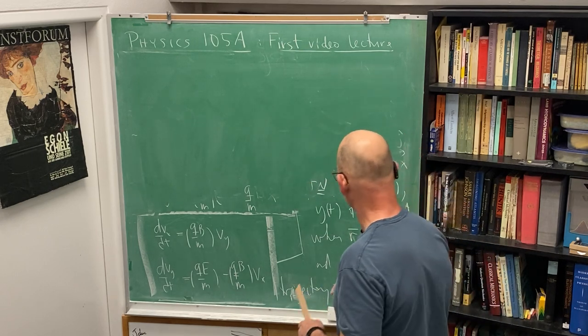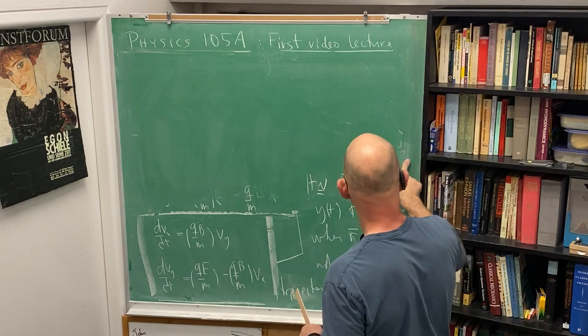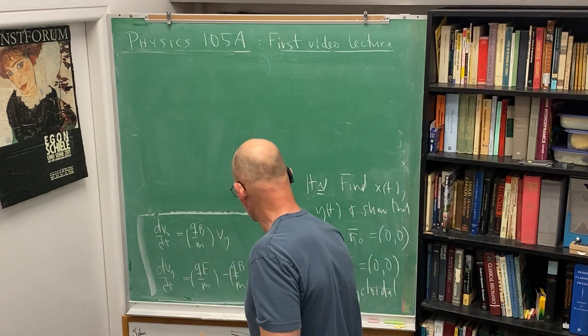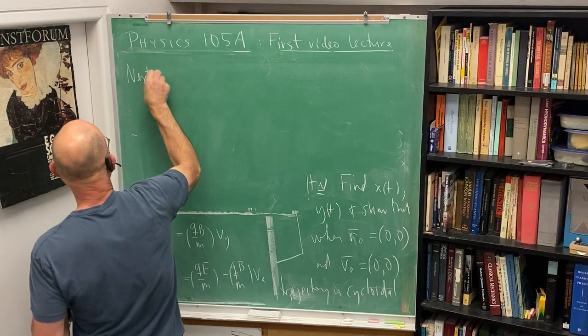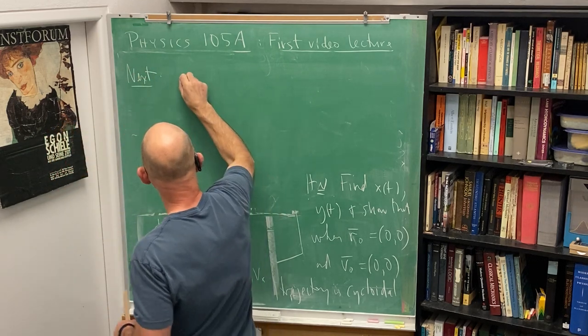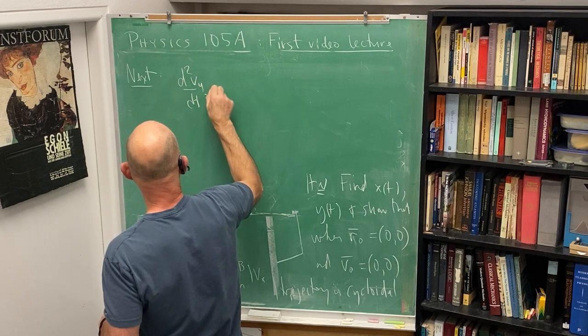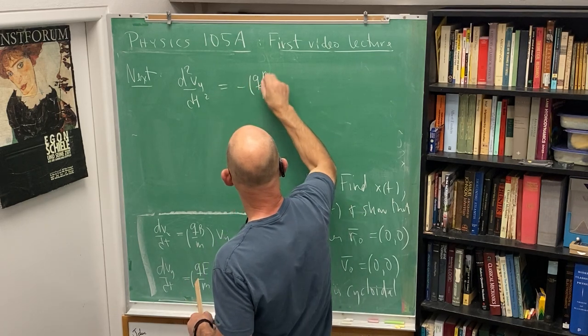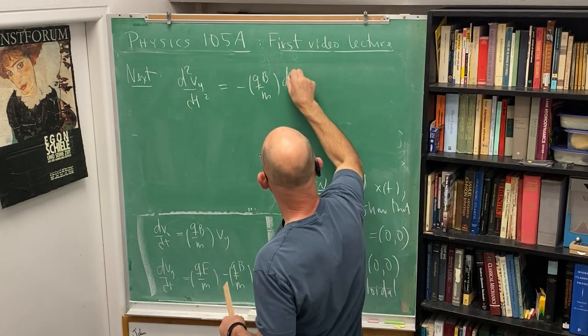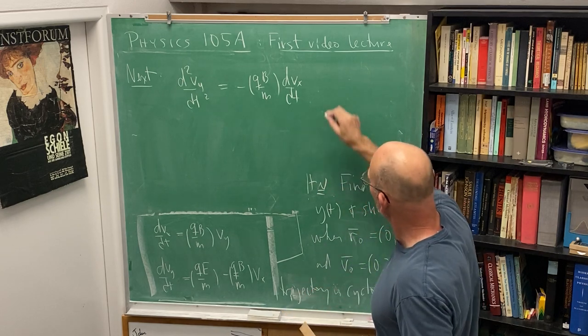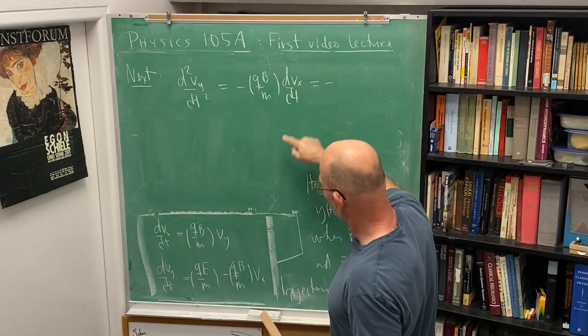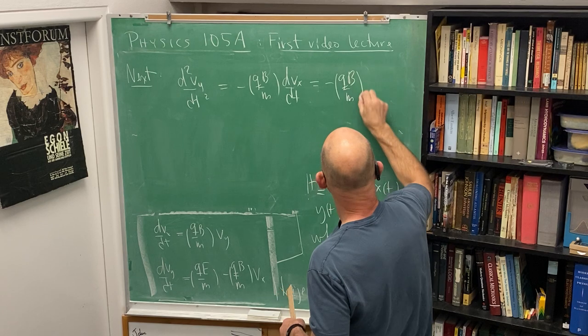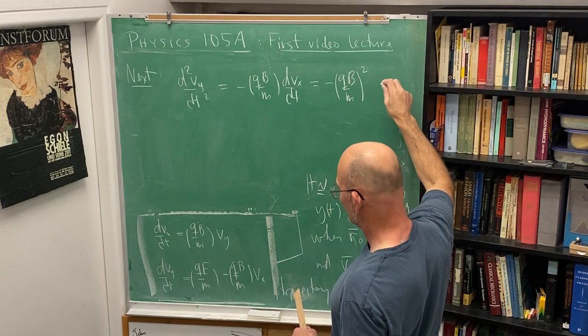So here we go. Next step. We take our second equation. We have d squared vy/dt squared is equal to - that's a constant - zero. We get minus qB over m times dvx/dt equals minus - now the dvx/dt is going to bring another qB over m - so minus qB over m squared times vy. That's an equation or solution we can just write down on the spot. That has this form. So that's cosine omega t plus sine omega t.